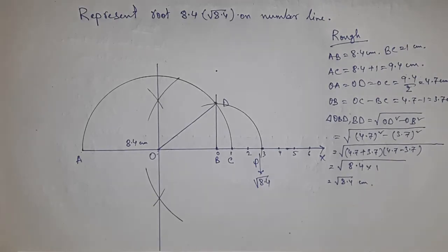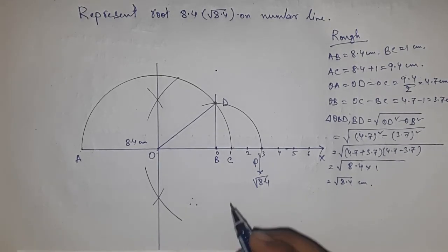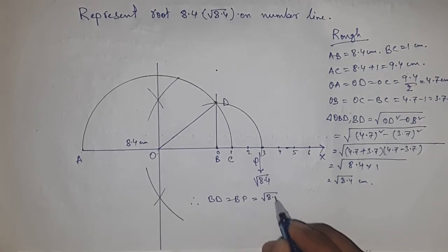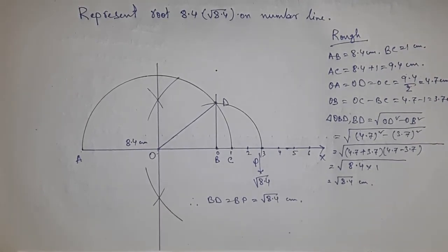And from this one, this is root 8.4 centimeters. Therefore, distance BD and BP are equal, equal to root 8.4 centimeters. That's all.